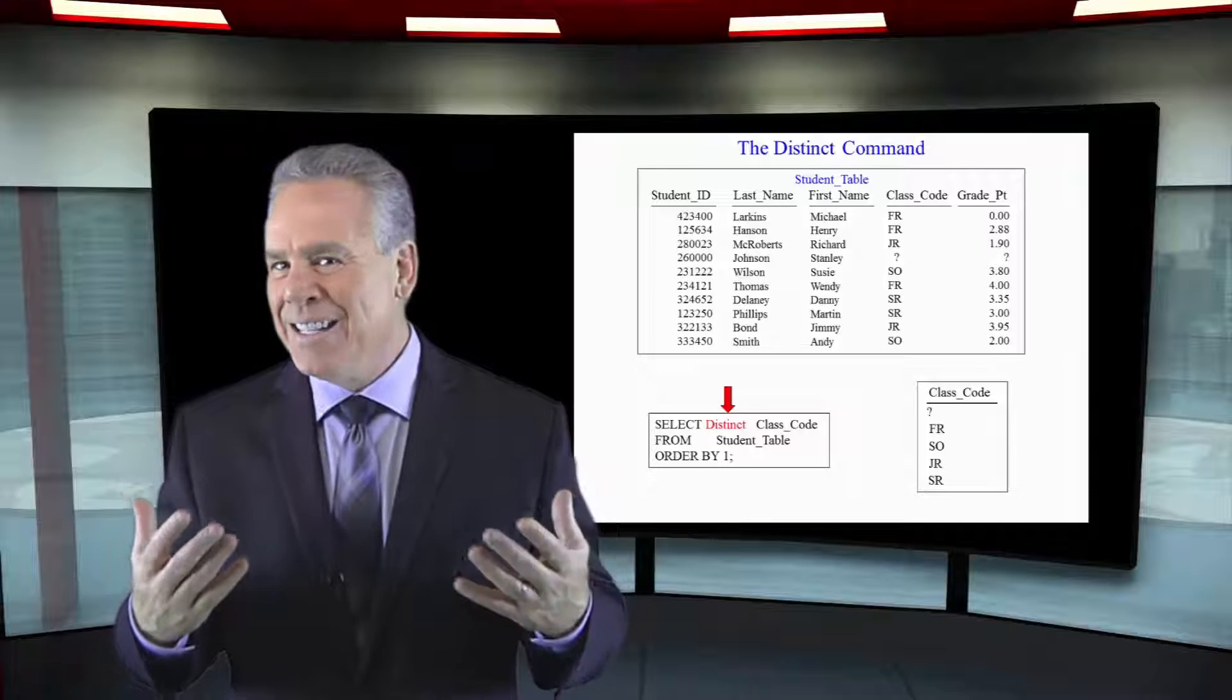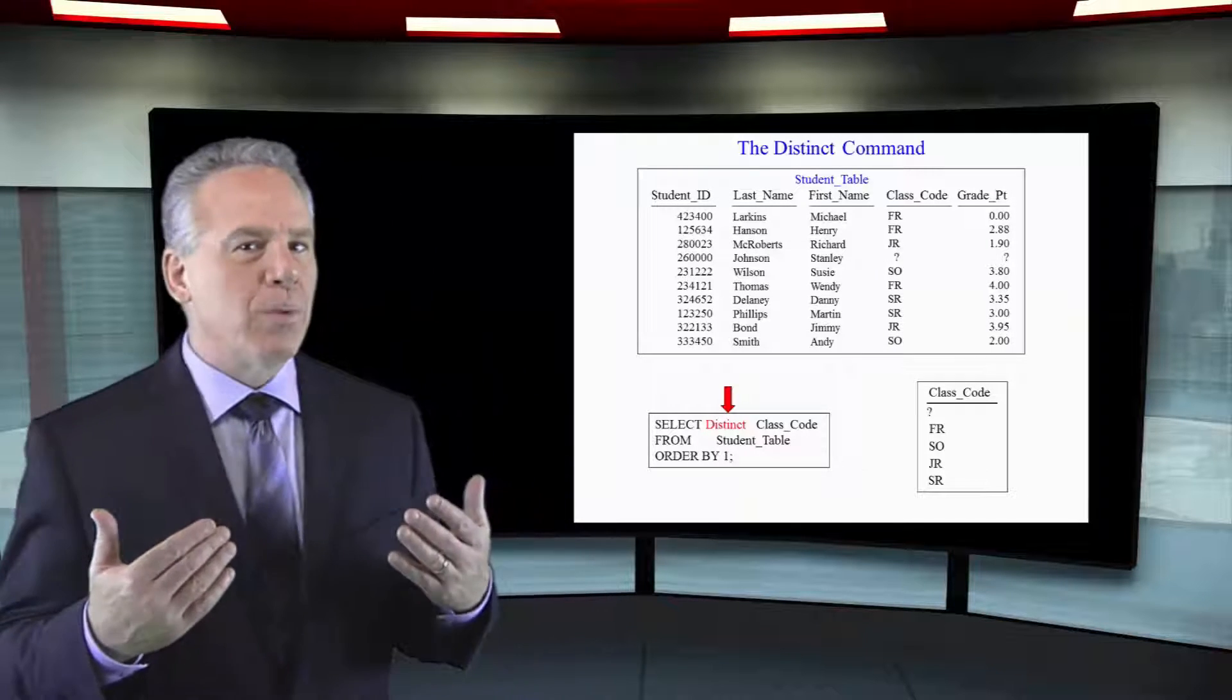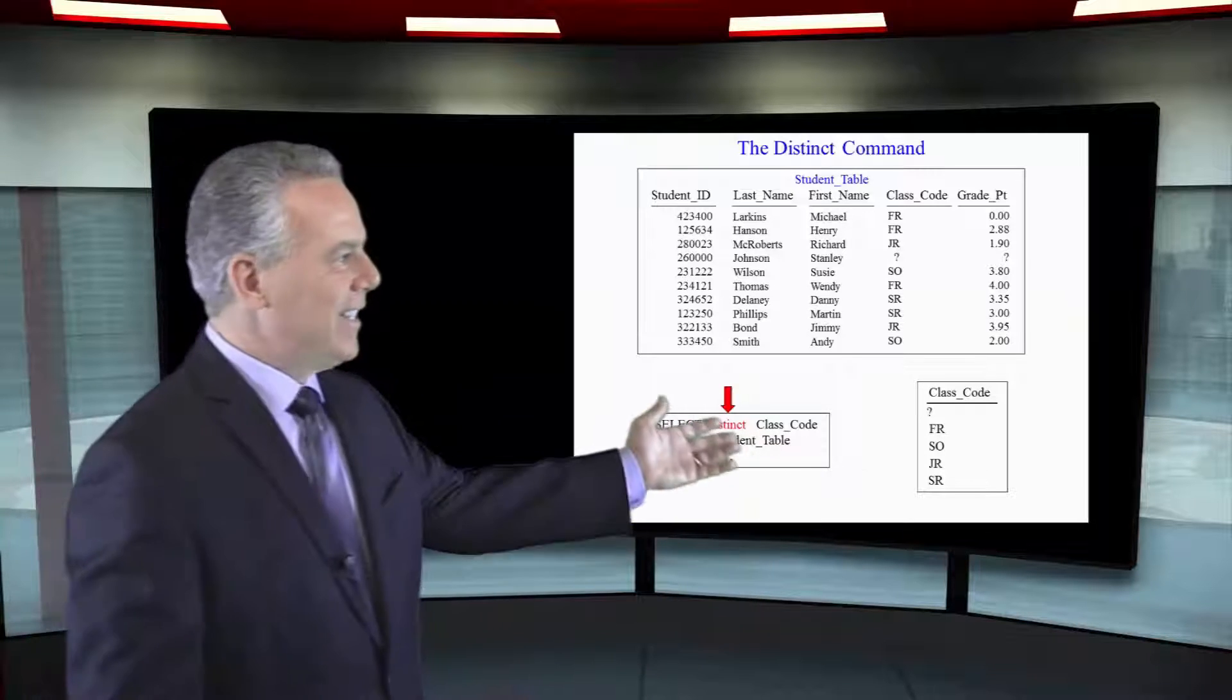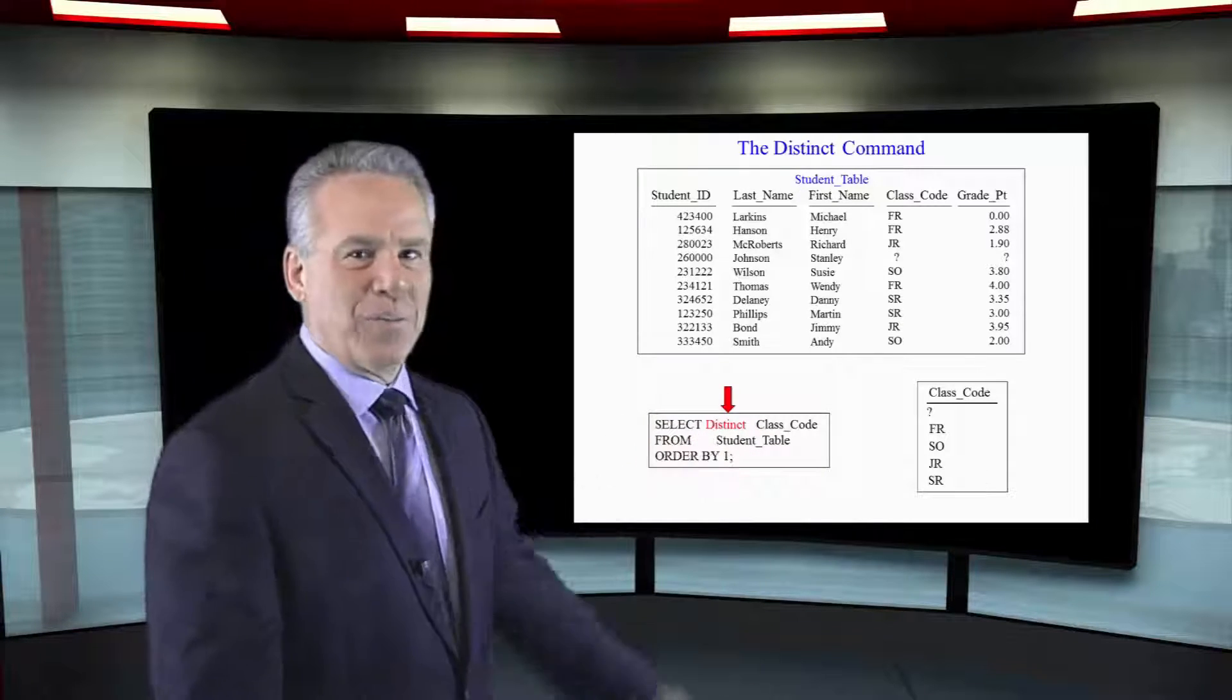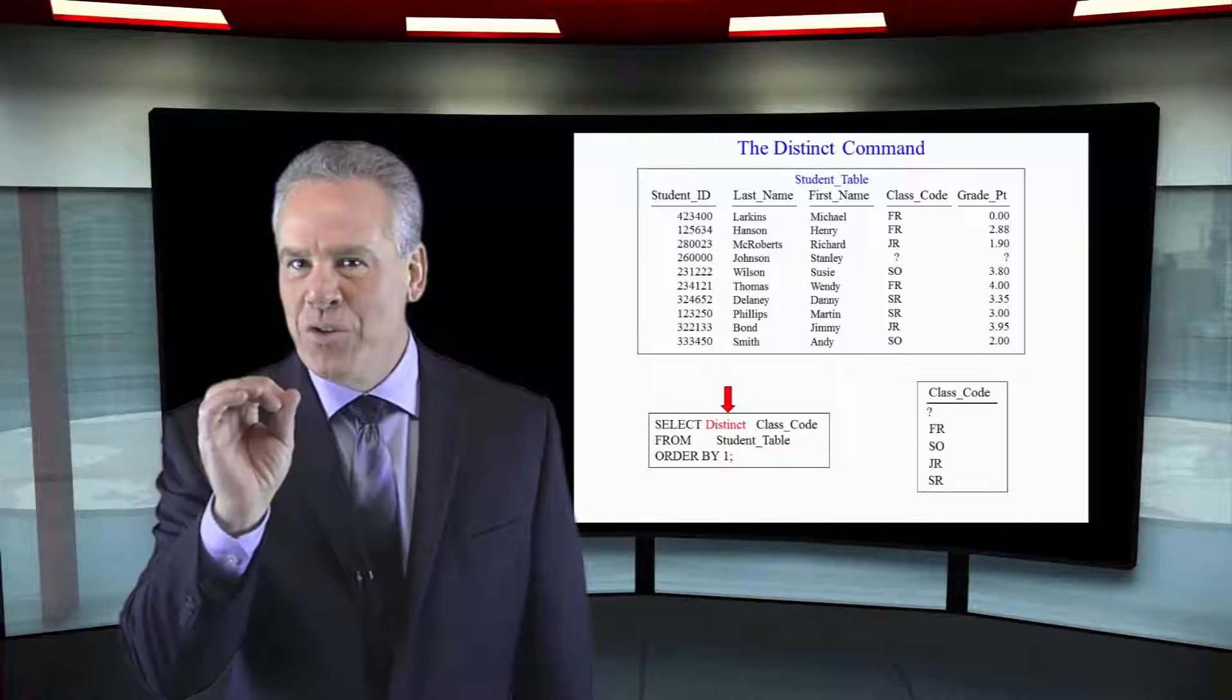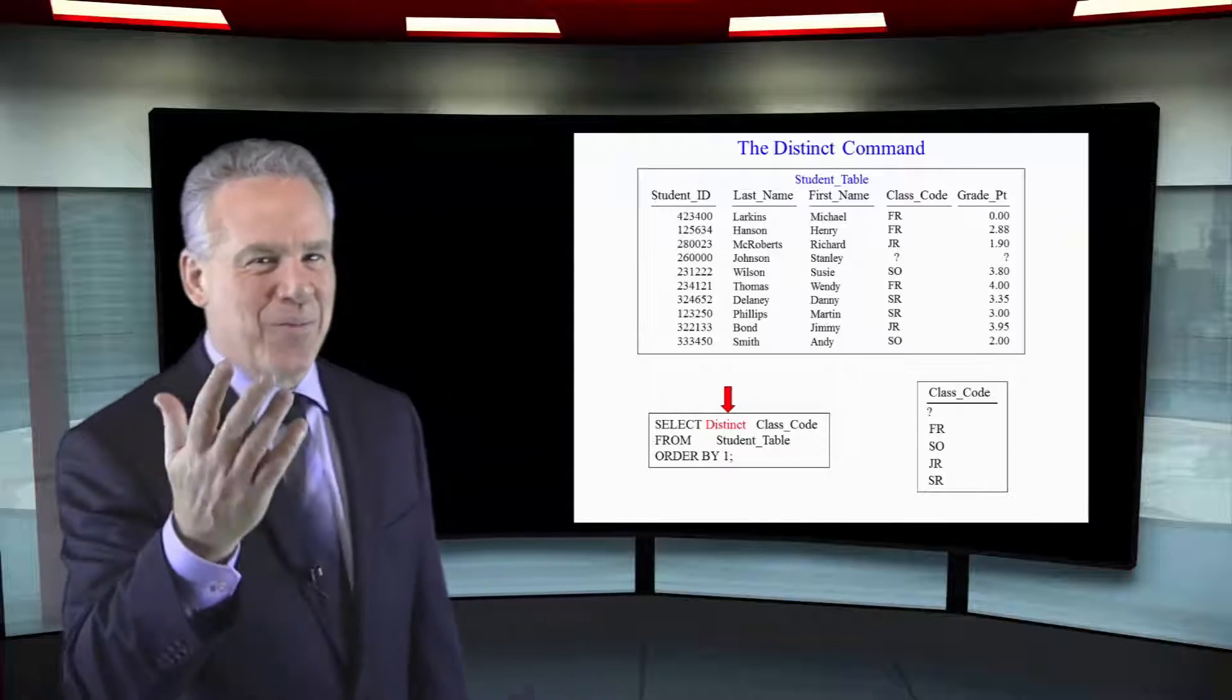But when I use the distinct command, it will only bring back one row. So when I say select distinct class code from student table, I'm going to get one freshman, one sophomore, one junior, one senior, and one null.